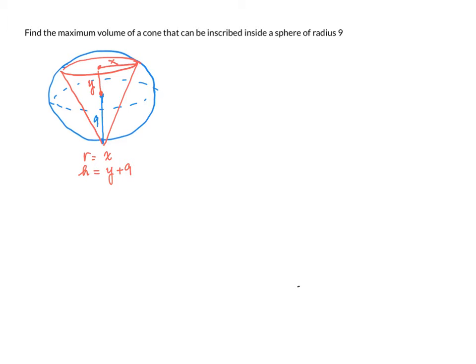Because 9 is the radius of the sphere, we must relate the point on the sphere that intersects with the cone, and that is this point right above. So the radius of the sphere is 9. Using the Pythagorean theorem, we have x squared plus y squared equals 9 squared. And that is given.